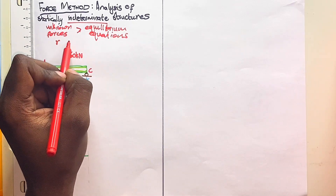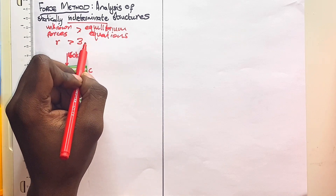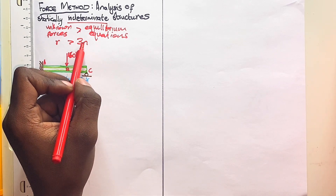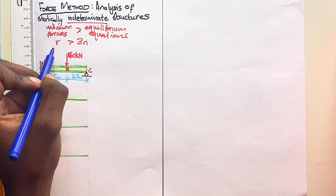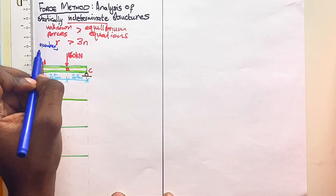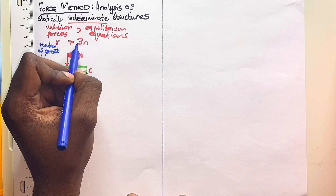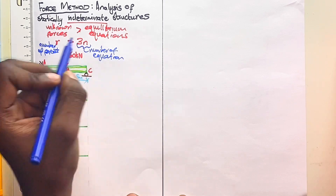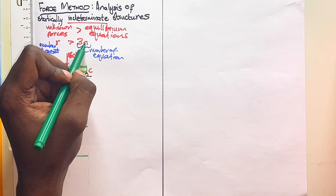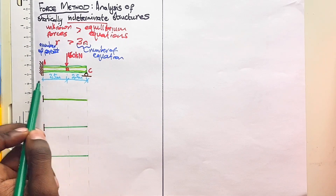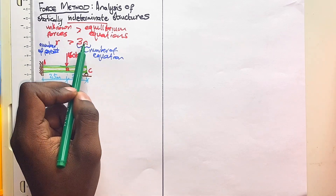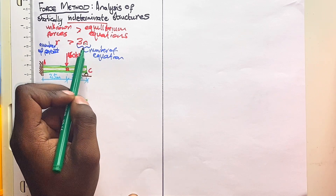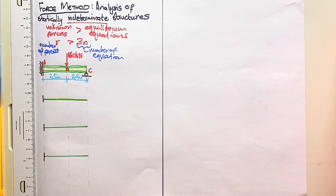We denote the number of forces using r, and if r is greater than the number of equations — given by 3n — then your structure is statically indeterminate. Here, r is the number of unknown forces while 3n gives the number of equations, and n is the number of parts your structure has. Since the structure drawn here has one part, substituting n=1 gives three equations of equilibrium.